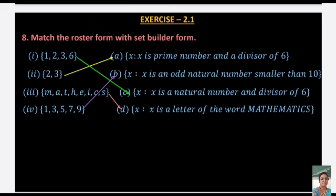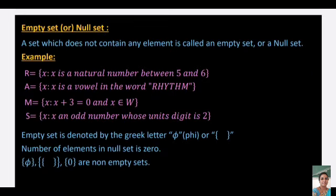Next: {m, a, t, h, e, i, c, s} — these are the letters of the word MATHEMATICS, so it matches 'x such that x is a letter of the word mathematics'. And {1, 3, 5, 7, 9} matches 'x such that x is an odd natural number smaller than 10'.